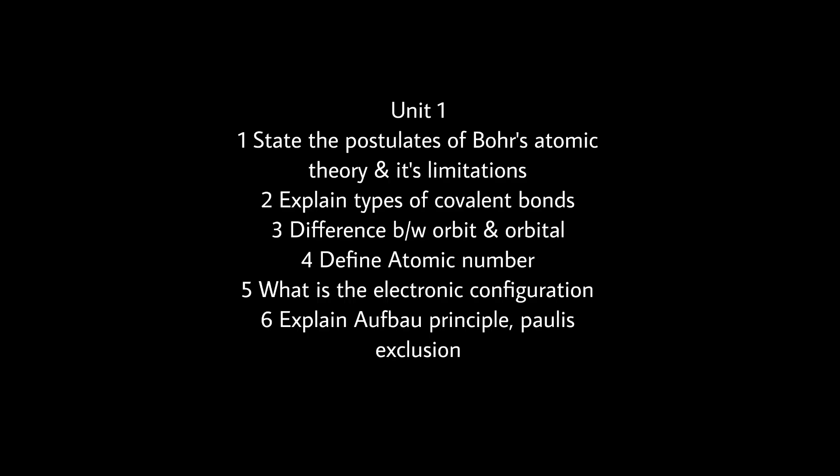Coming to Unit 1: the postulates of Bohr's atomic theory and its limitations, explain types of covalent bonds, difference between orbit and orbital, define atomic number, what is the electronic configuration, explain Pauli's exclusion principle. You can use short answer and long answer format, for example using different atomic numbers for one-mark questions.